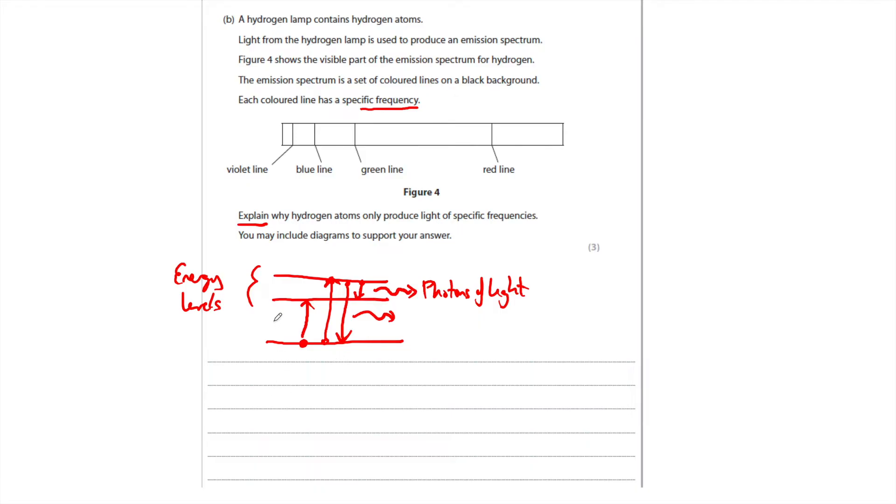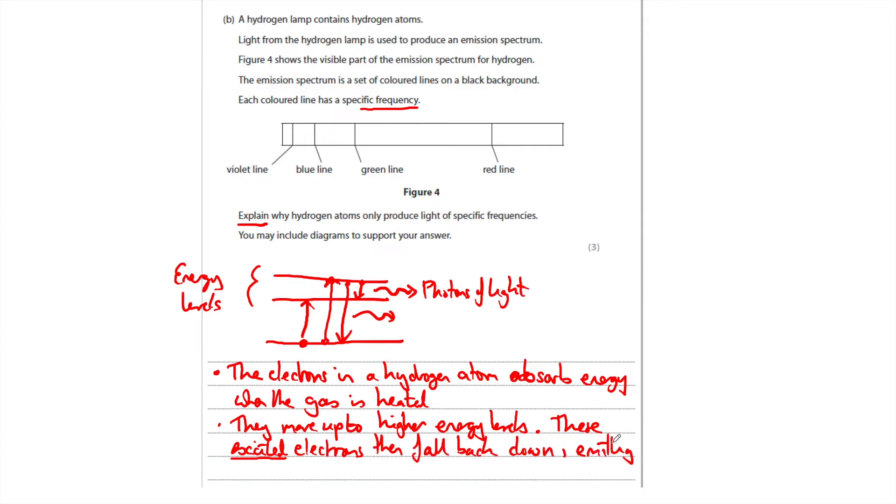So what would I put for my three marks as well as sketching that? The first thing I need to say is the electrons in the atom are excited and go up to higher energy levels because you're heating the gas or sending electrical current through it. So, the electrons in a hydrogen atom absorb energy when the gas is heated. They move up to higher energy levels. These excited electrons then fall back down, emitting energy in the form of light photons. Different frequencies are produced depending on the change in energy.